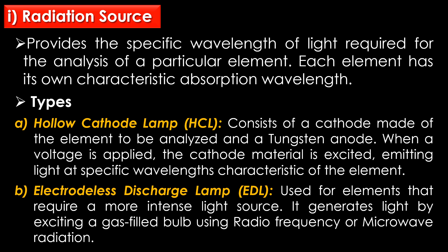The hollow cathode lamp is the most common radiation source. It consists of a cathode made of the element to be analyzed and a tungsten anode. When a voltage is applied, the cathode material is excited, emitting light at specific wavelengths characteristic of the element. The electrodeless discharge lamp is used for elements that require a more intense light source. It generates light by exciting a gas-filled bulb using radio frequency or microwave radiation.